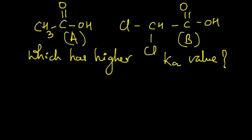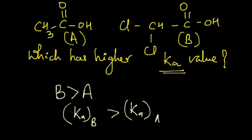And we need to find out which acid has the higher Ka value. We can see that B is a stronger acid than A due to the inductive effect, and therefore the Ka value of B will be larger than the Ka value of A. It is as simple as that.